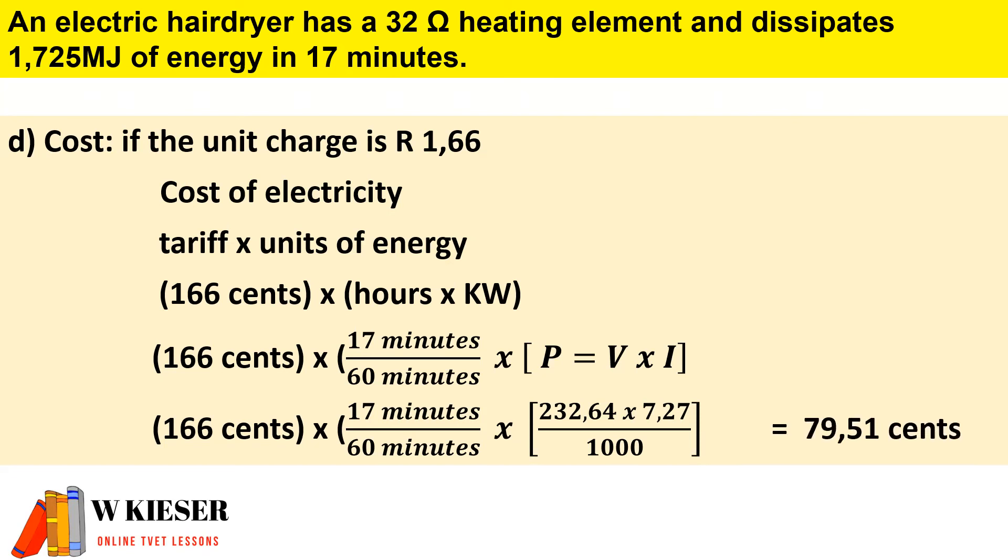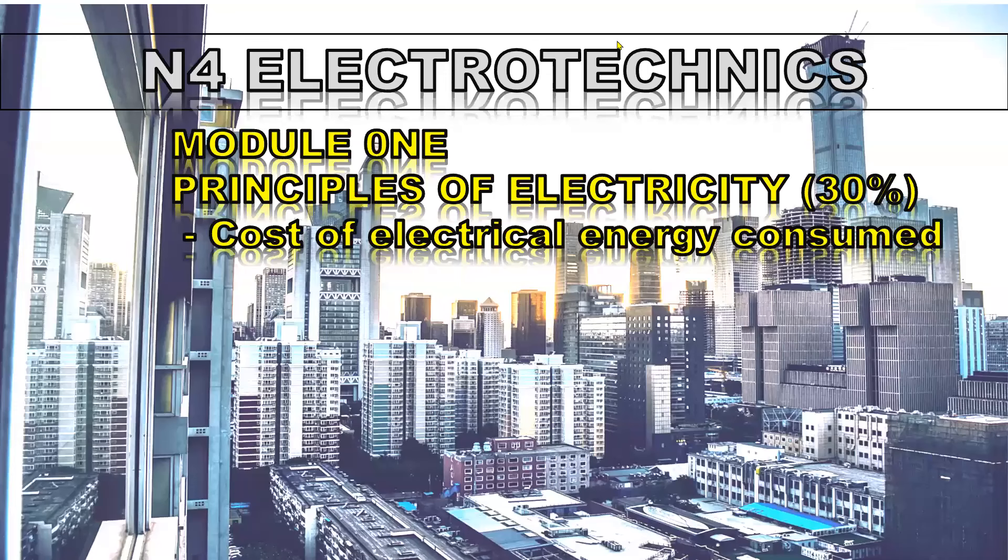Therefore, the total cost to run the heating element for 17 minutes will be 79.51 cents. Thanks for watching this video to calculate the cost of electrical energy consumed.